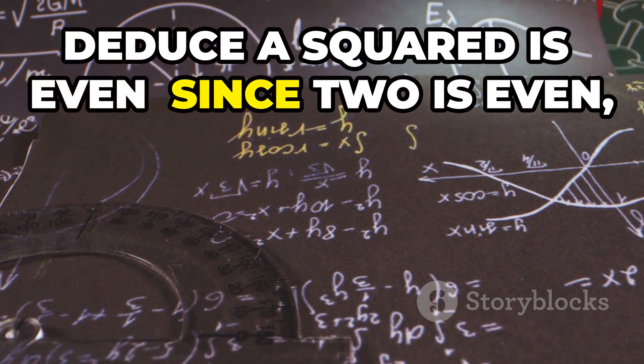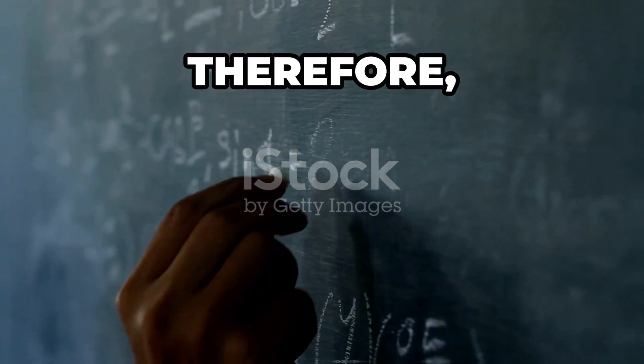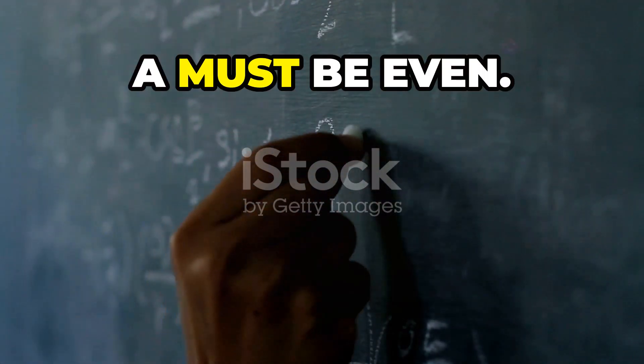Deduce a squared is even. Since 2 is even, a squared must also be even. Therefore, a is even. If a squared is even, a must be even.